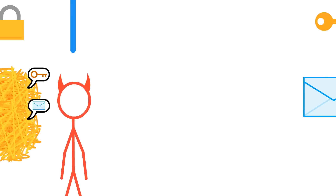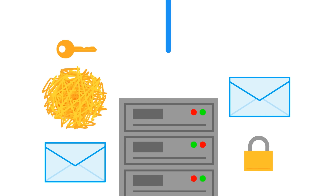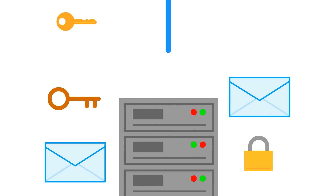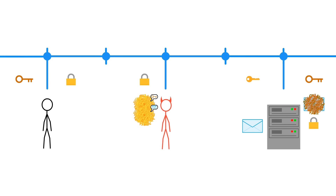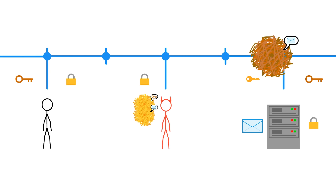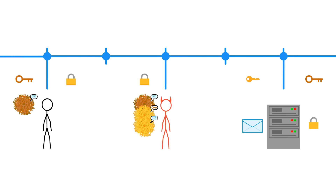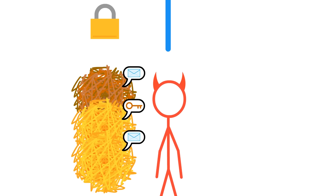The server can then get your key and unscramble it. Now, each of you can use this new key to both scramble and unscramble messages. Even better, the eavesdroppers can't get this new key, since it was scrambled when you sent it to the server. Hooray, it worked!